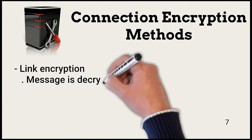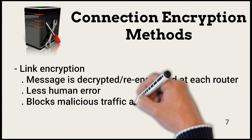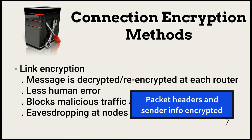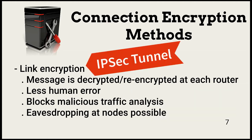Data in motion is commonly protected in two different ways: with link encryption and end-to-end encryption. Link encryption begins at the source and creates a secure tunnel at the data link layer to the destination. The source encrypts the data and sends it. Each routing point — switch, router, or other network node — in the message path decrypts the message and re-encrypts it. This approach provides less human error because of all the encryption handled by devices in the message path. However, eavesdropping is possible at each node where decryption occurs.